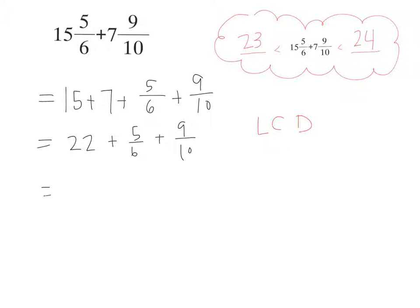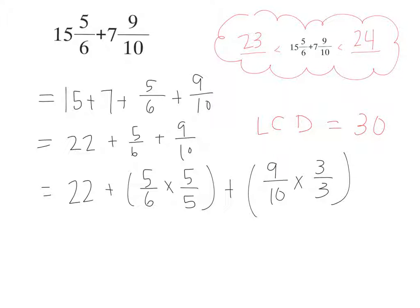So let's do that. Let's write out our multiplication equations. We can't forget the whole number. We have to write 22 plus 5/6 times some version of 1 to get the LCD of 30 at the bottom. What version of 1 do I want to multiply 5/6 by? 5/5. You got it. And then our next fraction is 9/10. We also want to multiply that by some version of 1 to get us a denominator of 30. What version of 1 should we use? 3/3. Now let's write it out. We have 22 plus 25/30 plus 27/30.